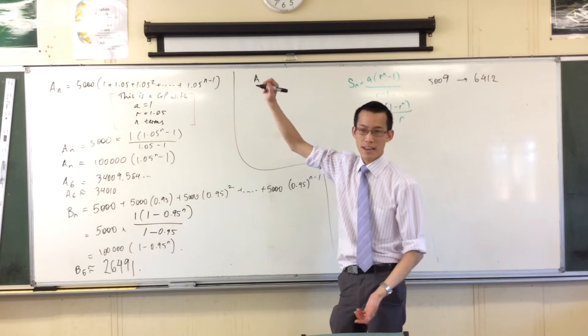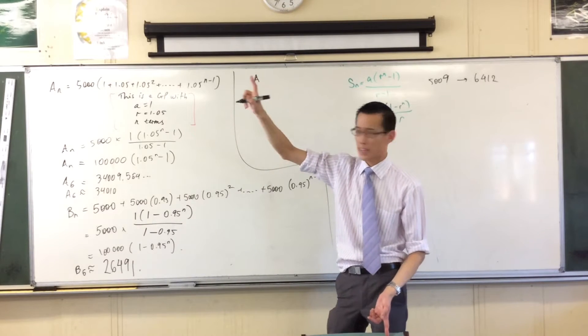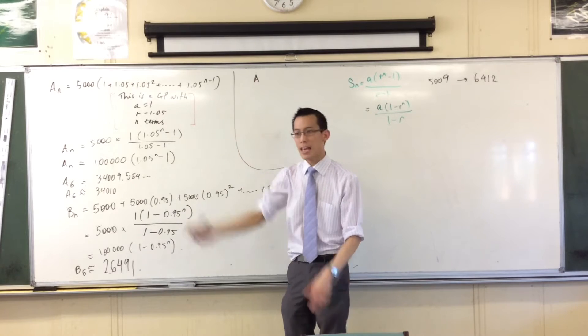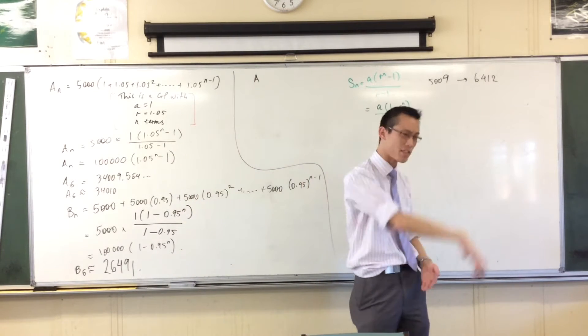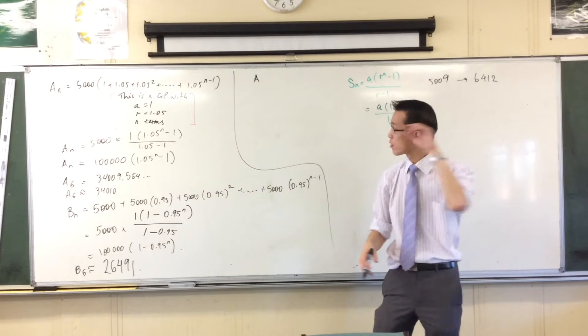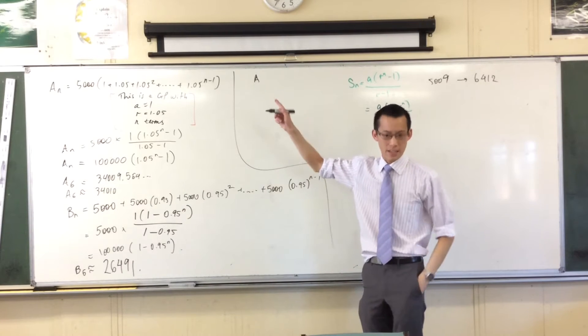Now you got to be careful, right? Because what is A? A is that partial sum, isn't it? It's the first year and the second year and the third year all the way up to the nth year, right? That's what A_n is.